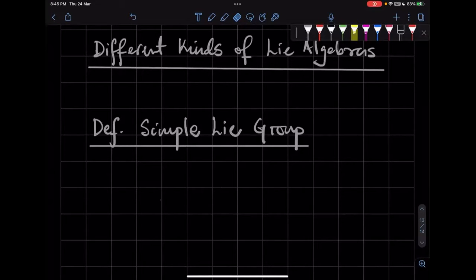Okay? So you can have a subgroup, but it cannot be a normal subgroup. So, of course, if it has an abelian subgroup, then the abelian subgroups are, by definition, normal subgroups, right?